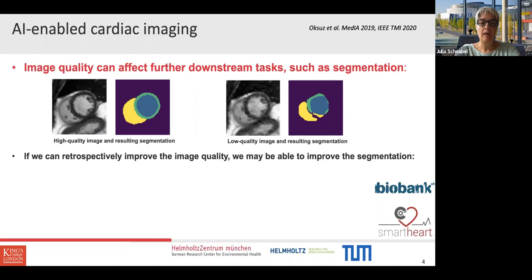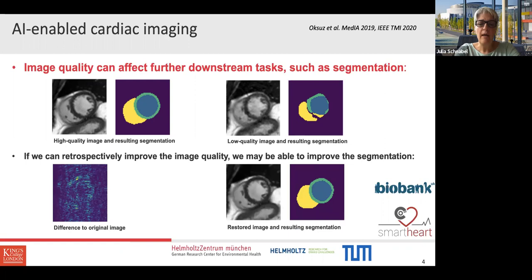Quite often we don't have the option to bring the patient back into the scanner to take a better picture. We have to work on the database — we either discard it completely, which is terrible for patient workflows, or we could try to retrospectively improve image quality to improve the segmentation. If we're able to restore the image quality, we get a really nice picture, and running a U-Net for segmentation gives something comparable to the high quality segmentation, though not identical — and we can quantify the difference.